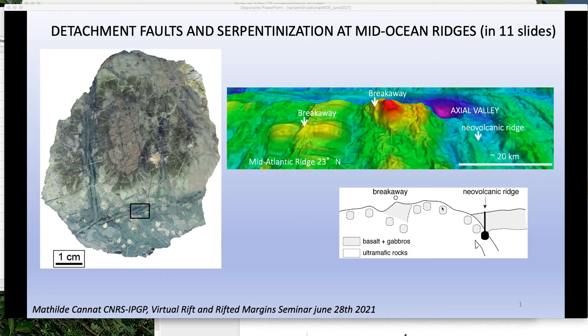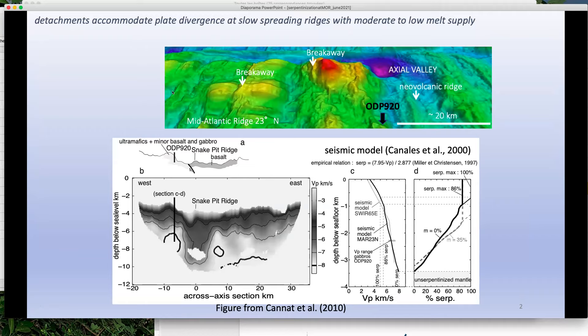The first thing we know is that serpentinization most probably extends down to significant depth, and that's given to us by geophysical proxies such as seismic velocity models. Here we have a seismic velocity model produced for the area where we drilled peridotites during ODP site 920. This line gives you 8 km/s — the base of the crust.